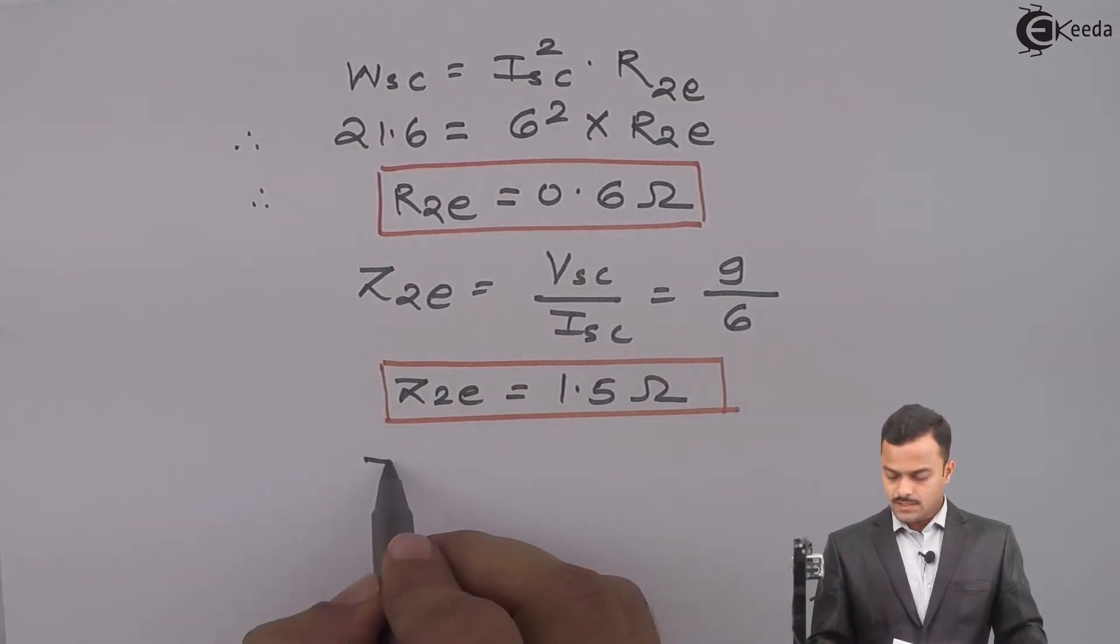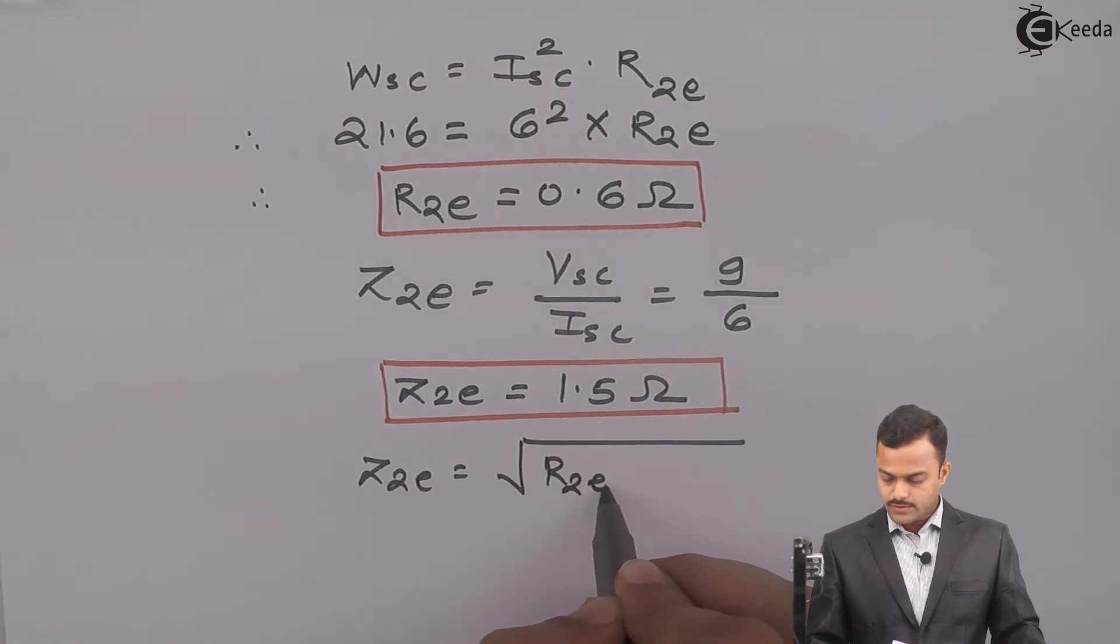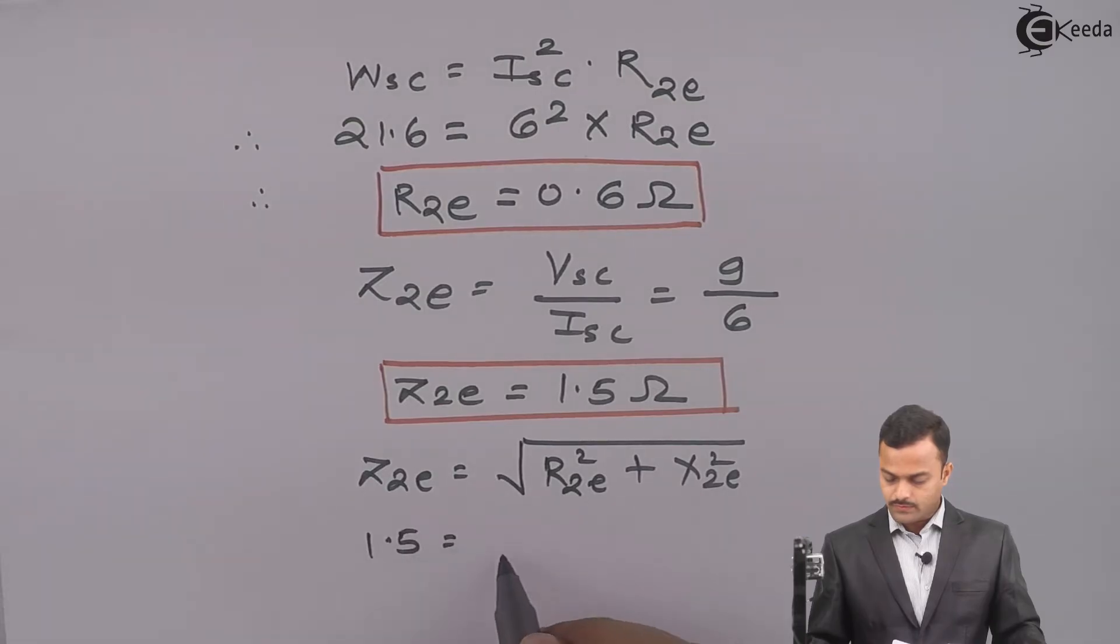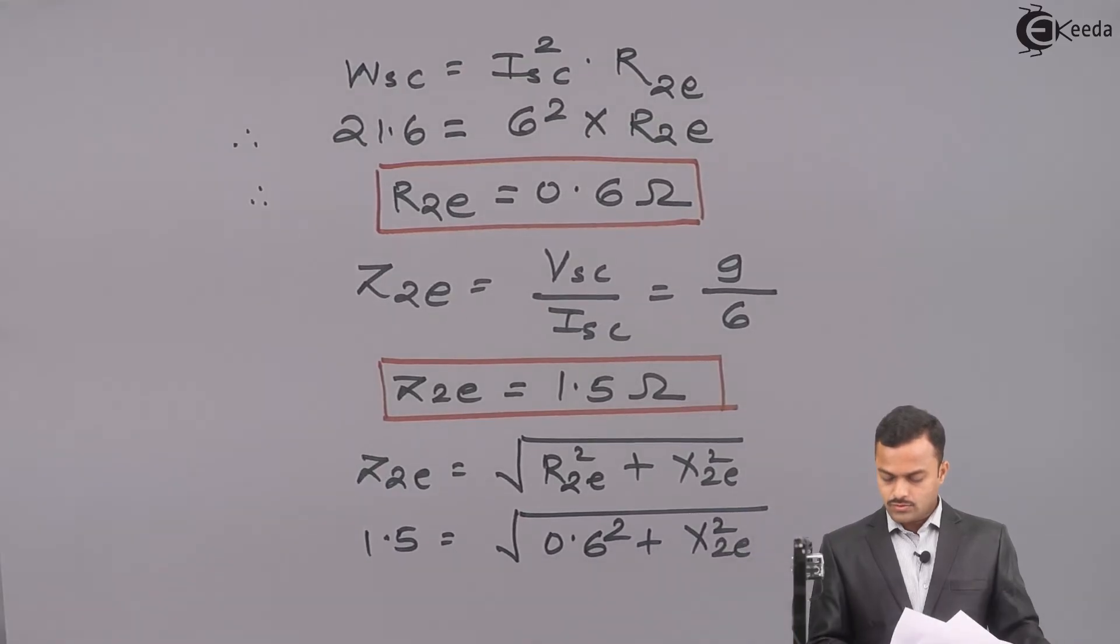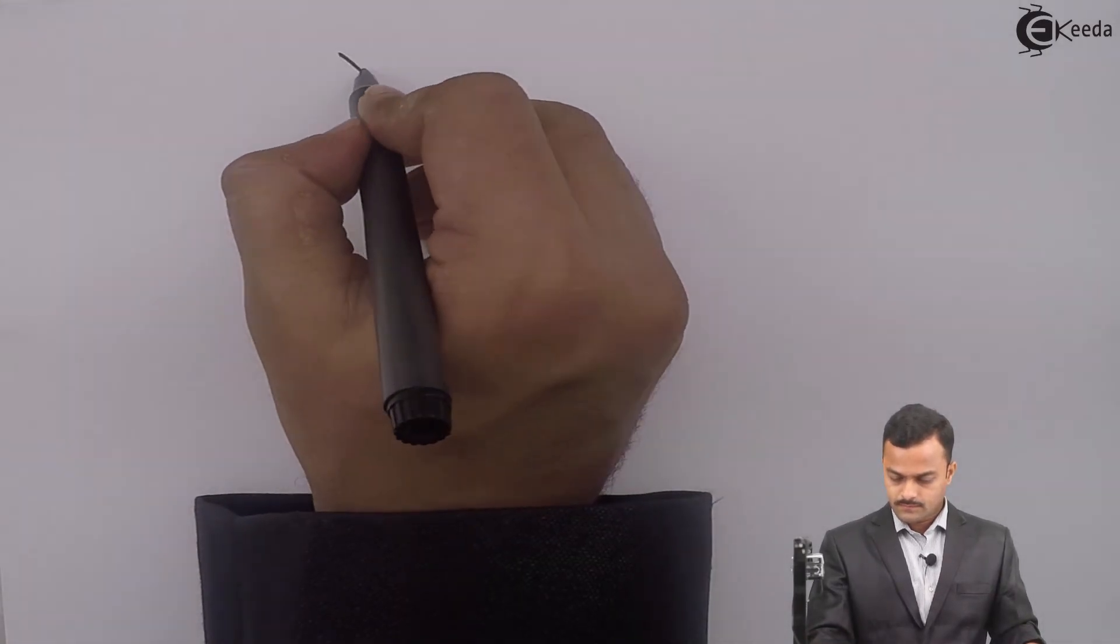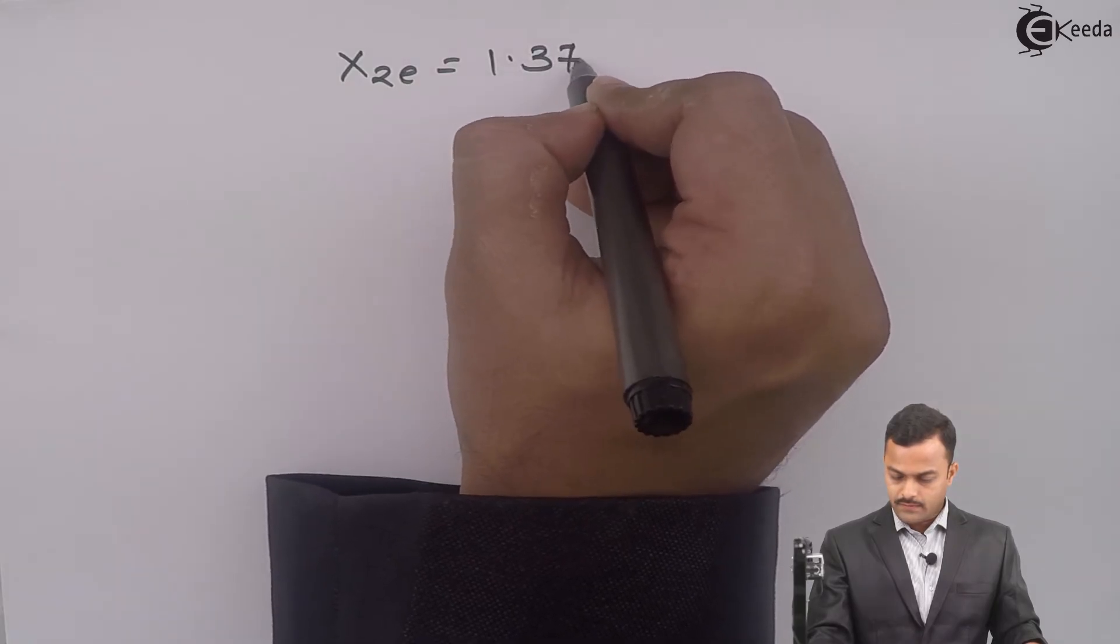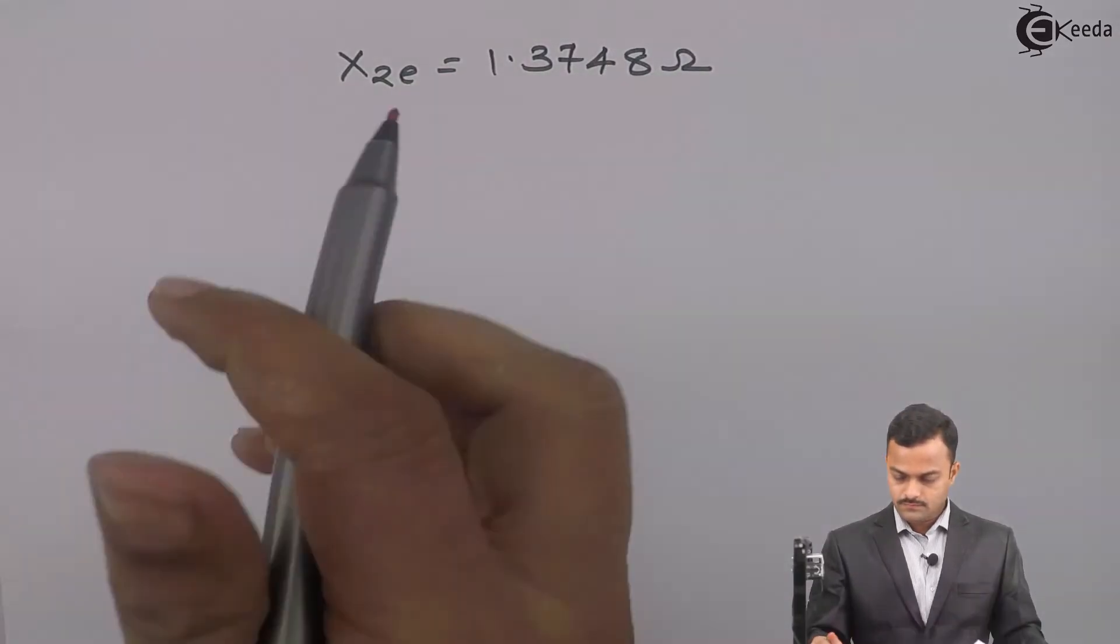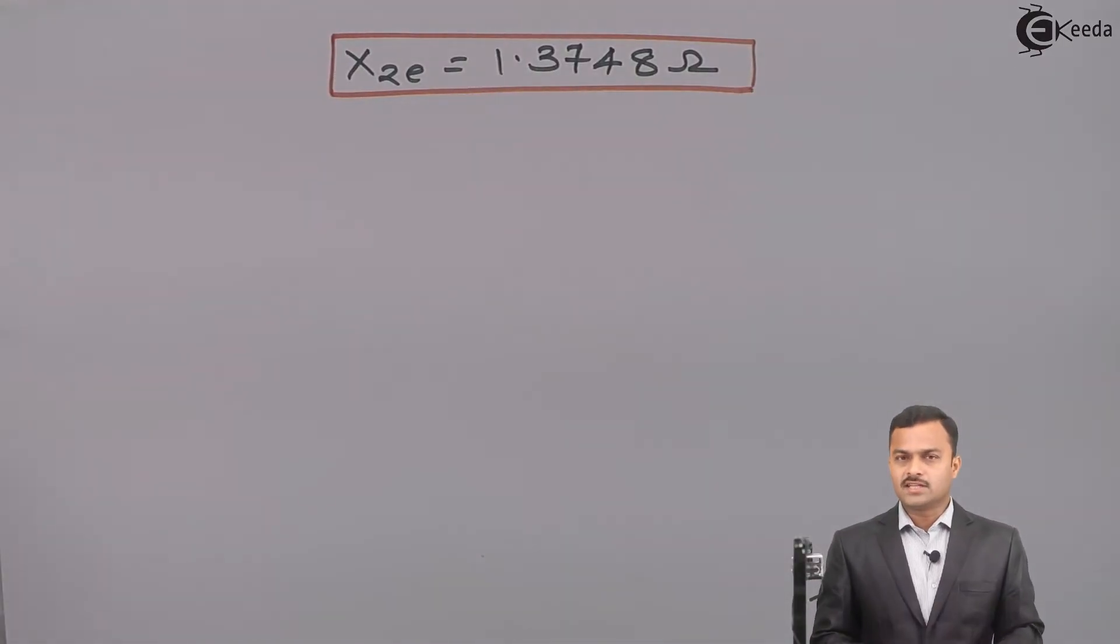Now, Z2E can also be calculated like this: root of R2E square plus X2E square. So 1.5 equals root of 0.6 square plus X2E square. The only unknown is X2E. X2E equals 1.3748 ohm.